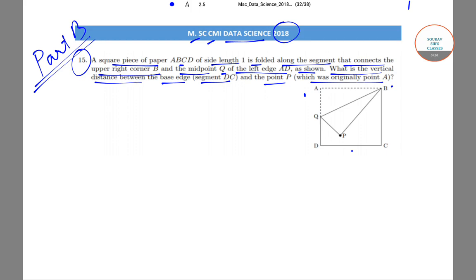What we will try to do is take this angle as equal to theta. Now we know that AB has a side length of 1, and AQ — since Q is the midpoint of AD — is equal to 1/2. So therefore we have tan θ = (1/2) / 1, which is equal to 1/2.